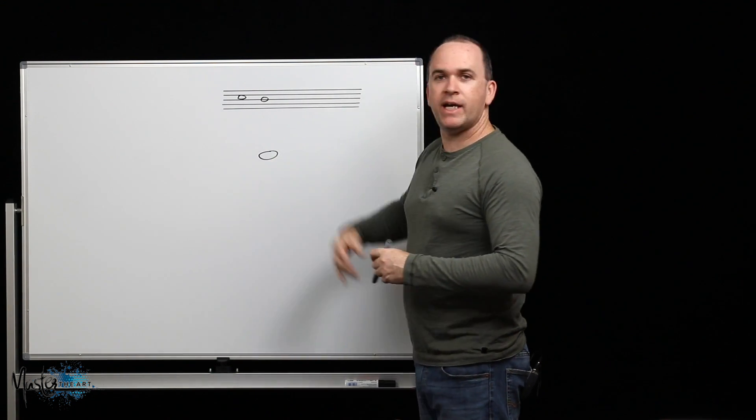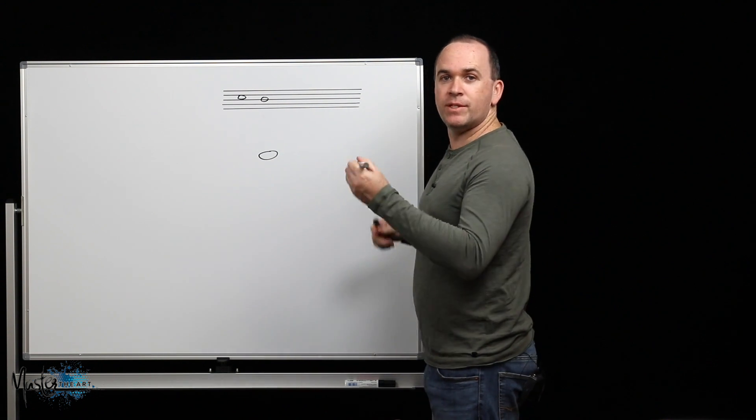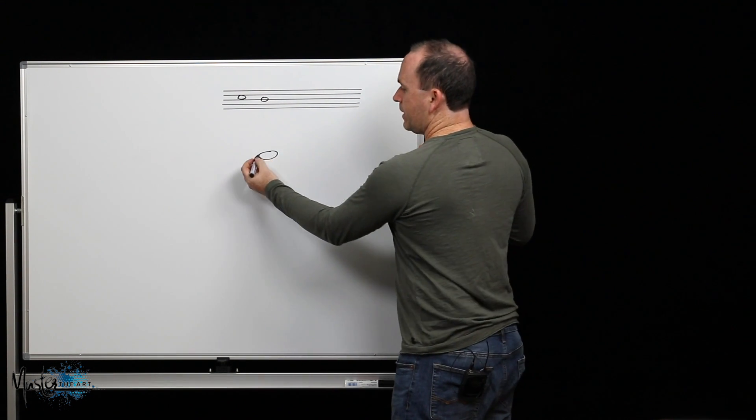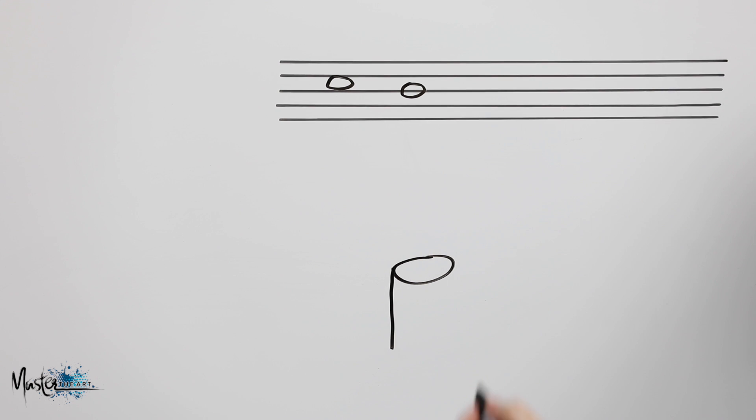When we draw a minim, you have the head of the note just like a semibreve, but there's also a stem going off it. The stem can go down to the left, or if I draw another head, it can go up to the right.